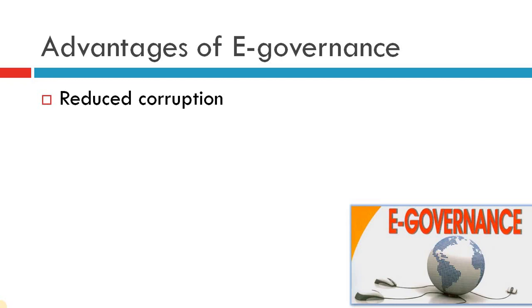What are the different advantages? First advantage: reduced corruption. Since everything is going to happen online, nobody is going to move to the offices, nobody is going to meet anyone physically. So they are going to reduce corruption.